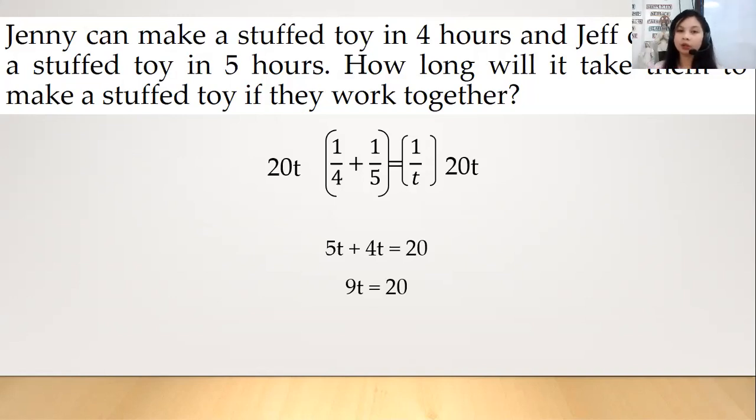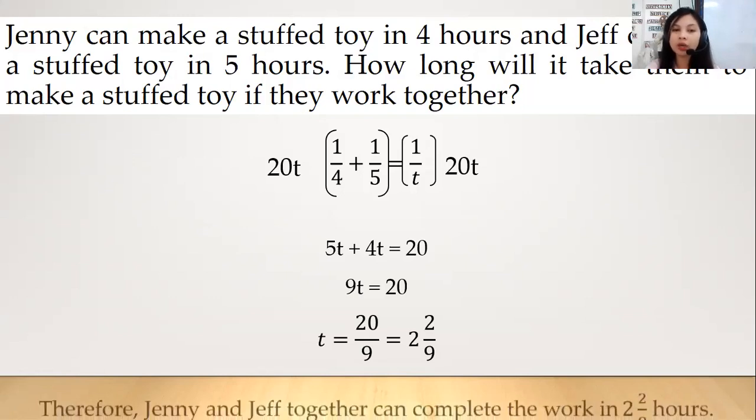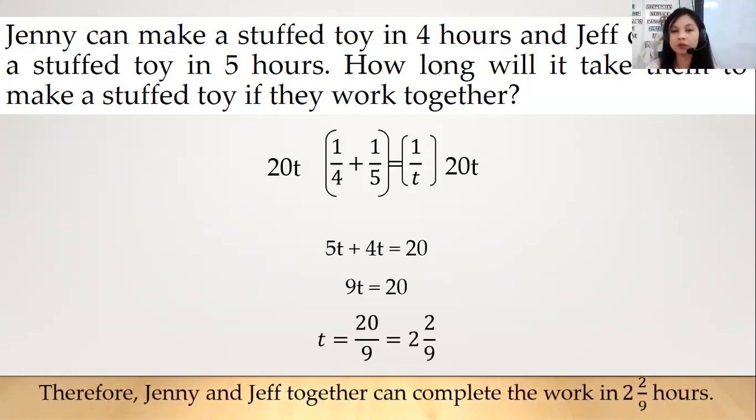Ngayon, again po, in order to find the value of our variable, we have to eliminate yung kasama niya. Okay, so we have to divide both side, yun, we have to divide both side by 9. So, it will become 20 over 9 or kapag it-renounce form natin siya into mixed number, it will become 2 and 2 9s. Okay, so therefore, Jenny and Jeff together can complete the work in 2 and 2 over 9 hours. Okay, so ayun po siya.